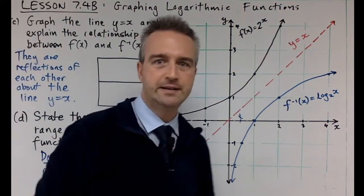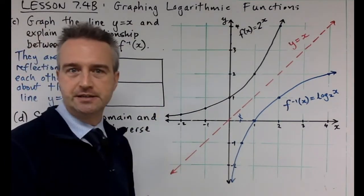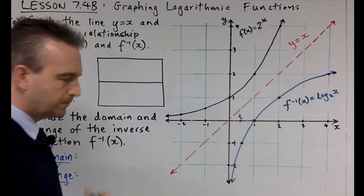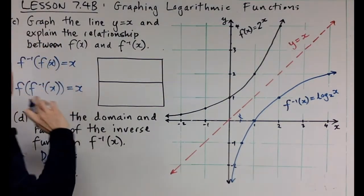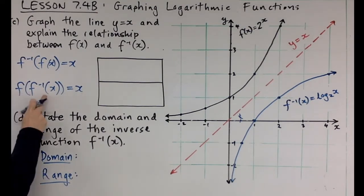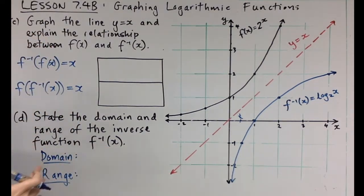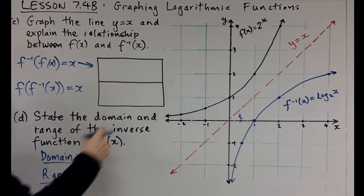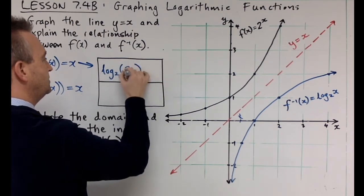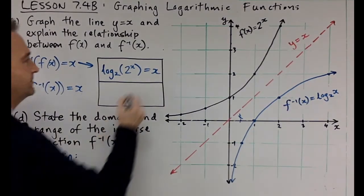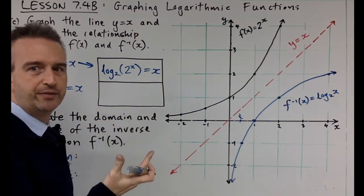Note that these two functions never actually intersect, but they are still reflections of each other about y equals x. From an earlier lesson, we know that the composite function f inverse of f of x equals x, and f of f inverse of x also equals x — the functions cancel each other out. Written using the exponential and log: log base 2 of (2 to the power of x) equals x. If you take 2 to the x and then take the log of that result, you end up back where you started.